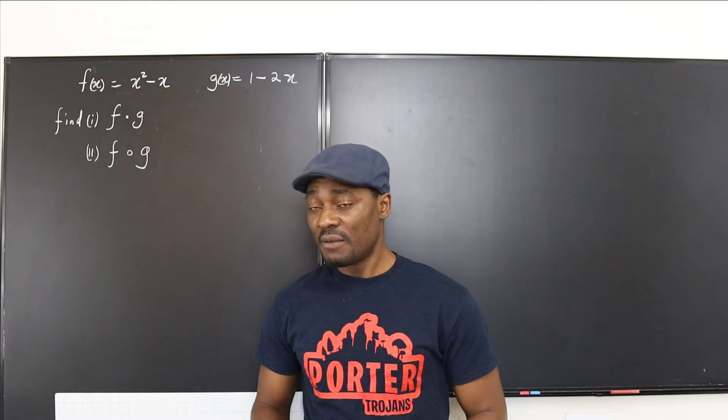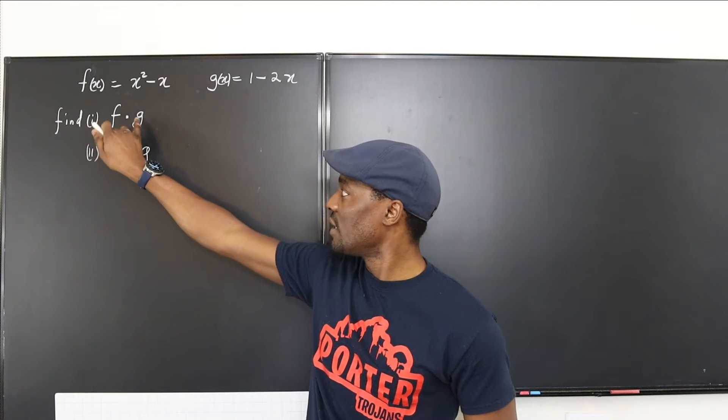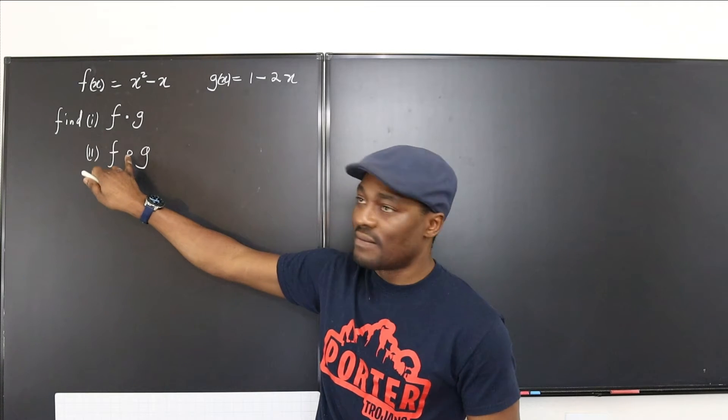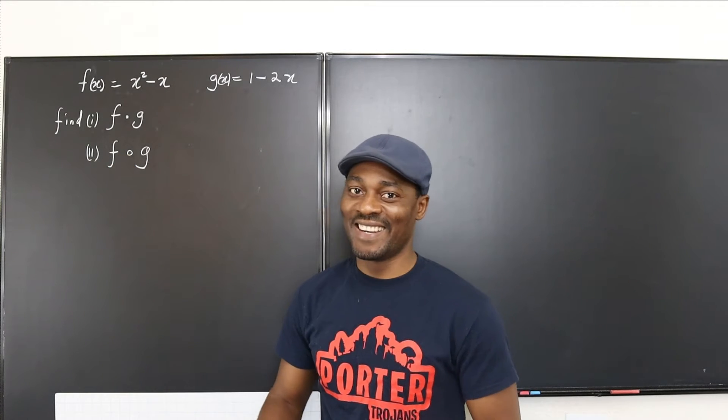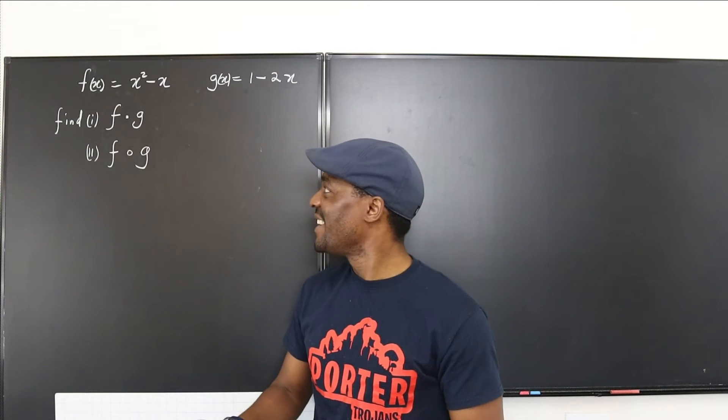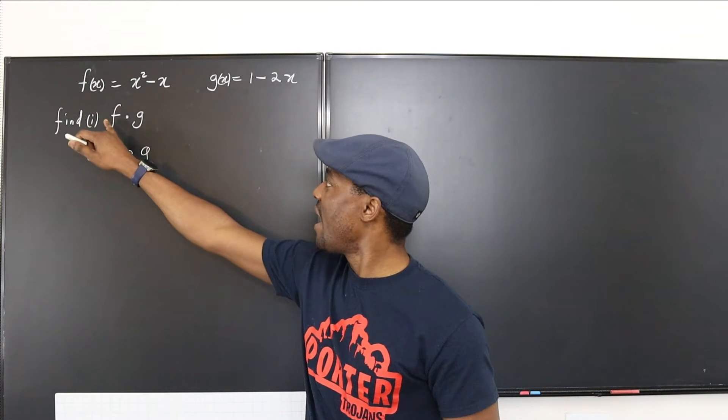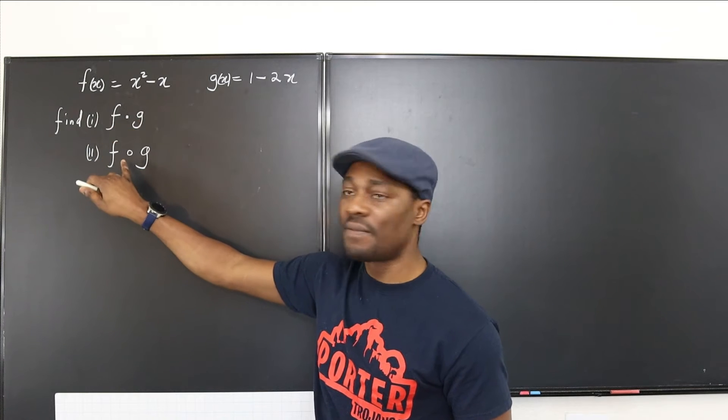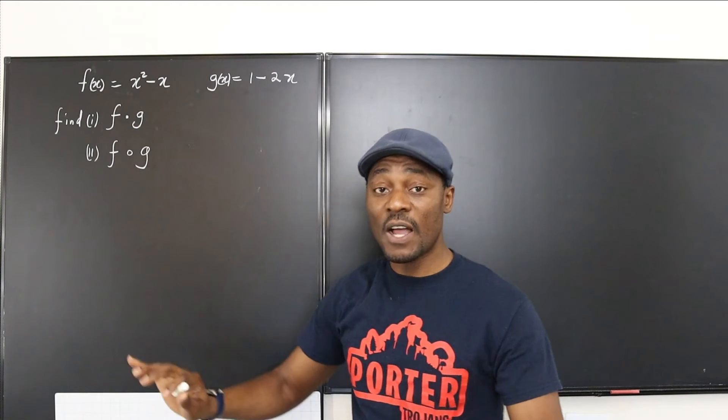Is there a difference between f dot g and f of g? I'm just going to read it that way, but the correct way to read it is: is there a difference between f times g and f of g? So that's how to read it.